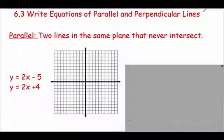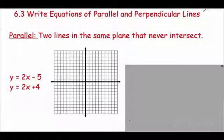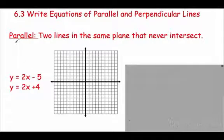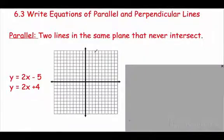All right, welcome back — 6.3. We are going to talk about some special lines: parallel and perpendicular lines, and writing the equations with those. First thing we need to know: parallel lines are two or more lines in the same plane that never intersect. Let's see what we're talking about — we have 2x minus 5.